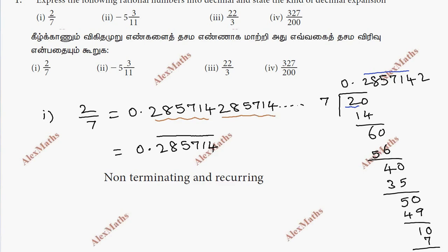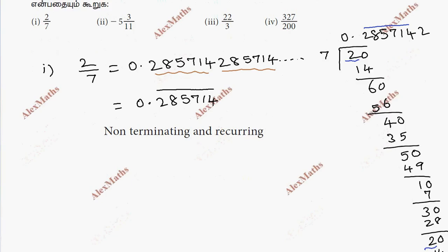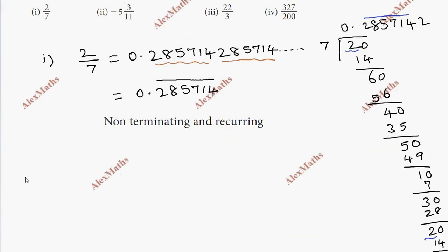Sub-division 2: minus 5 and 3 by 11. So we write it as minus 53 by 11.